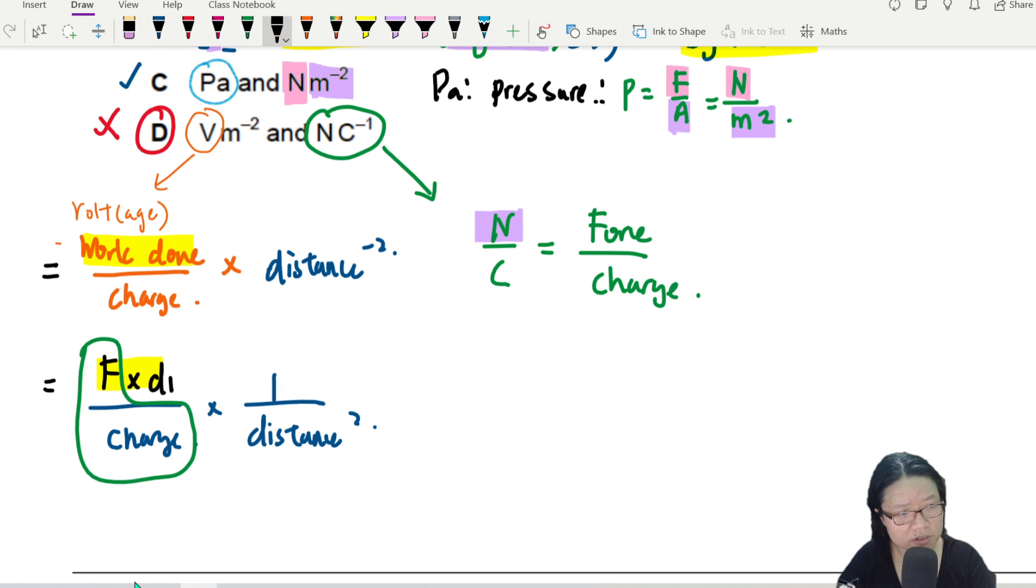You see, immediately I got some problems already. One over distance square. Here, I need to think about what is newton. This newton is force. And then I look at this side. I have force over charge here. So displacement and distance can only cancel out one time. So this unit will end up being newton per coulomb times meter. Whereas this one is newton per coulomb. So that is D.